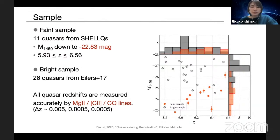And in order to measure accurately the proximity zone, we limit our sample to the quasars whose redshift measured by Mg II or C IV or CO emission lines. Since Lyman alpha redshift have large uncertainties in estimating intrinsic spectra, we excluded such objects from our sample.